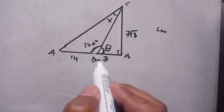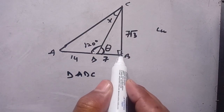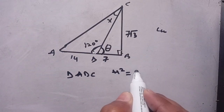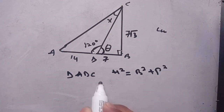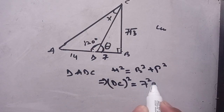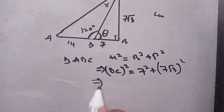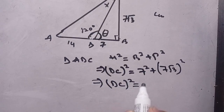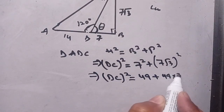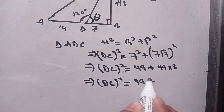Now we move to triangle ADC. Angle B is 90 degrees, so it is a right triangle. We use the Pythagorean theorem: hypotenuse squared equals base squared plus perpendicular squared. This gives DC squared equals 7 squared plus 7 root 3 whole squared, which implies DC squared equals 49 plus 49 times 3.